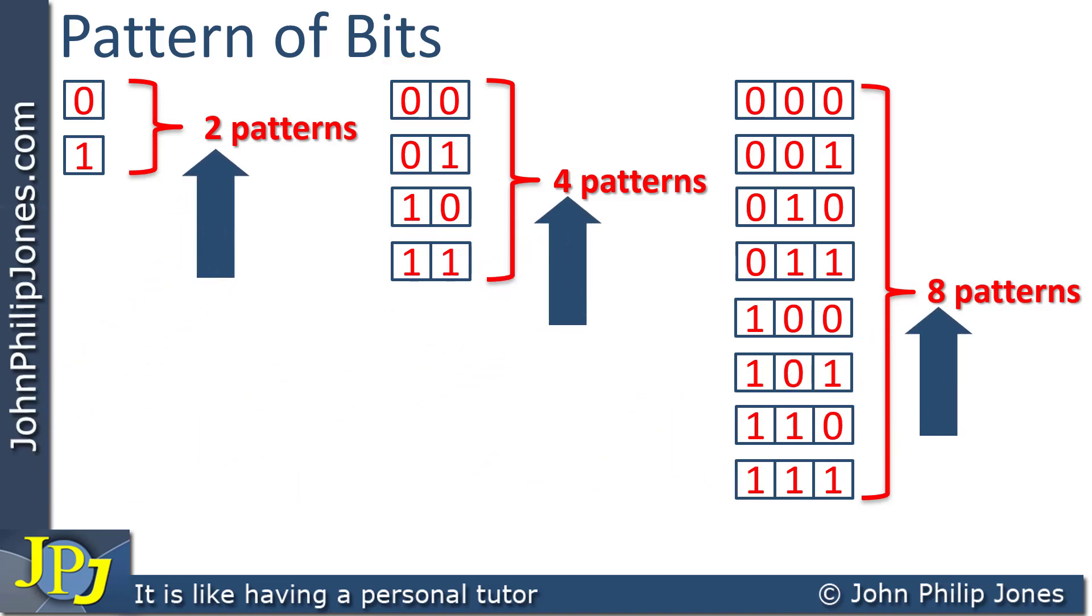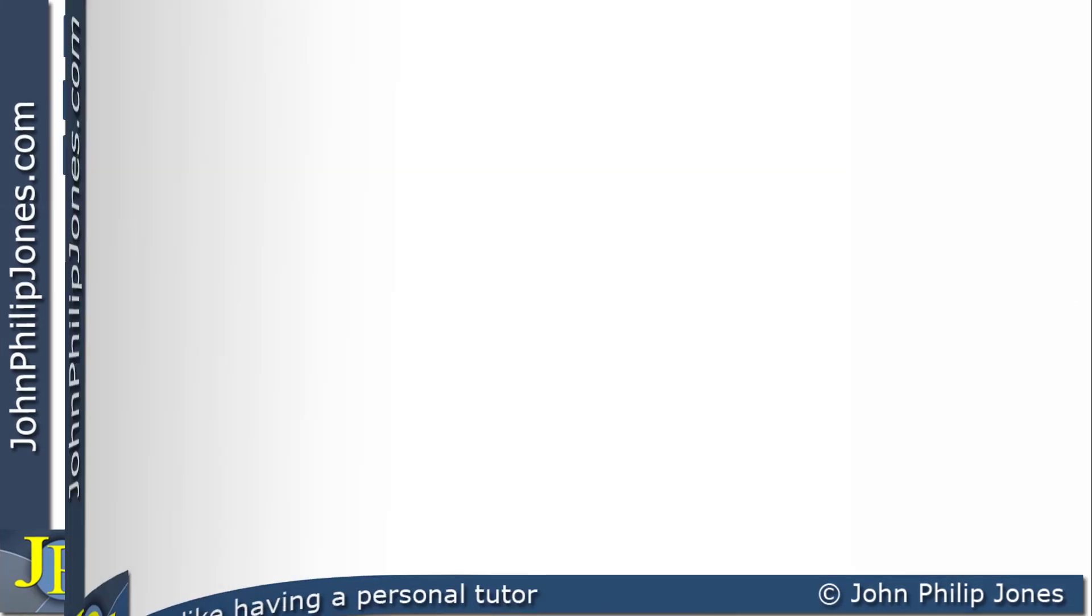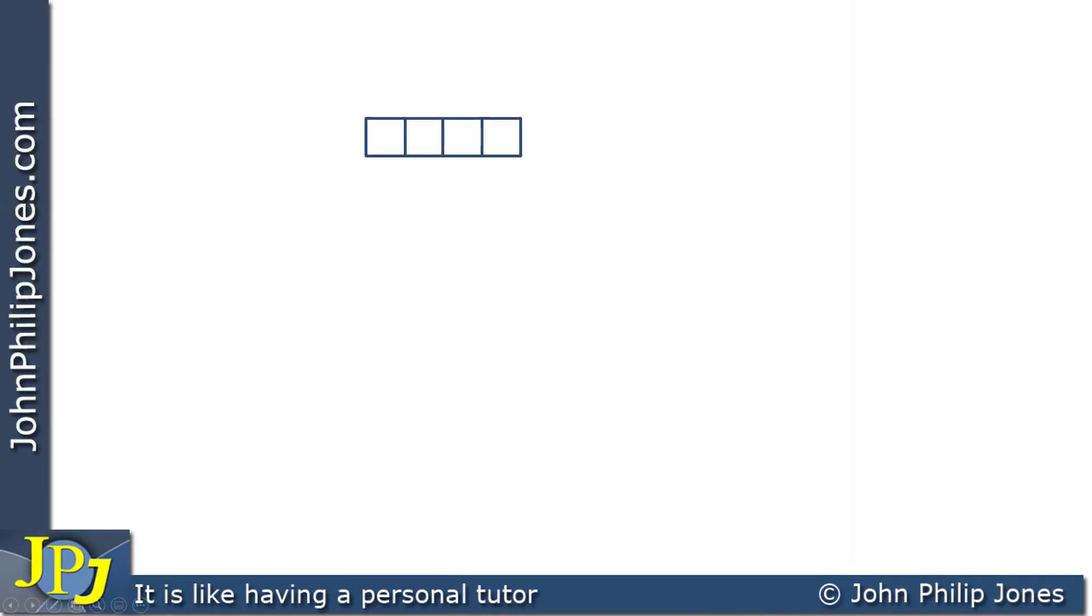There appears to be a doubling of the number of patterns we can have every time we add an extra flip-flop. So we should be able to predict how many patterns are possible when we have four flip-flops, as you can see here. We know three flip-flops gives us eight patterns. When we have four, it will double to 16. So let's see if that's the case.